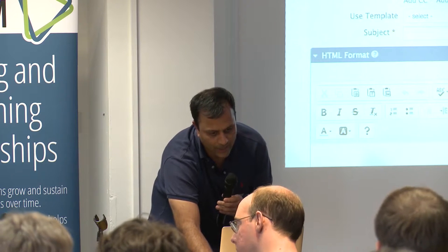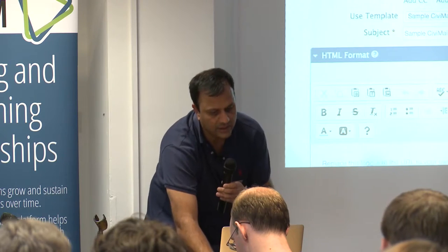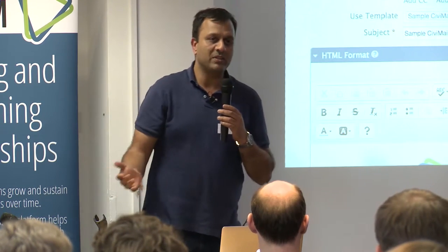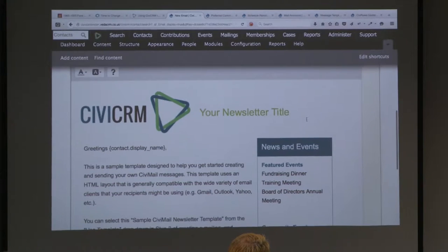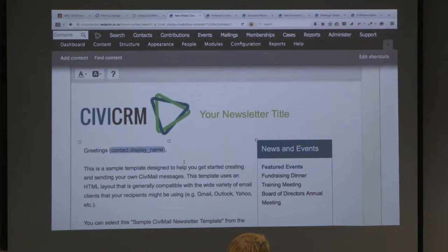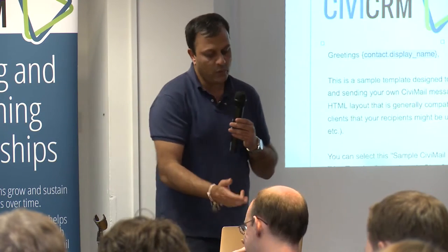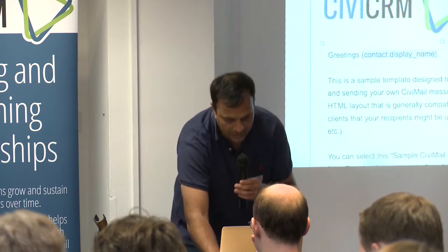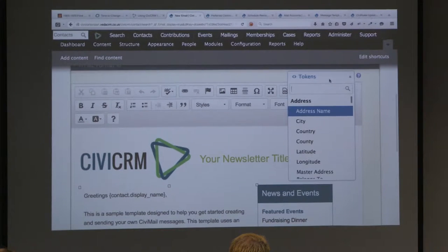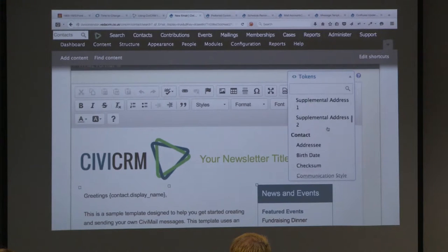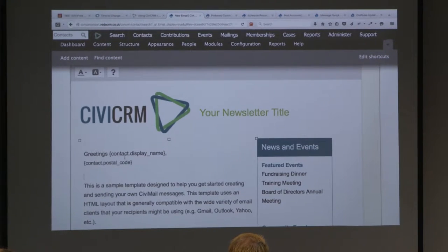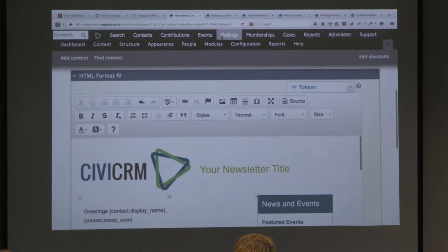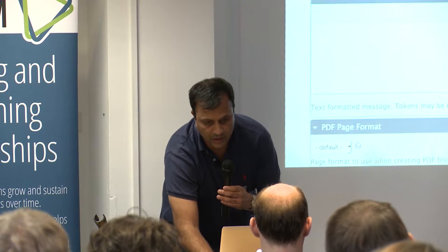Bulk email is a little bit different. With CiviCRM we've got templates - similar to Word templates you'd use for different things. You can keep a template, and here's a sample newsletter template. You'll see tokens - the curly brackets. In this template whoever gets this email is going to get 'Greetings John' or 'Greetings Sarah' - whatever the name is. If I want to add more tokens I can come in here and pick the token I want. For instance, if I wanted to add in a postcode I could do that and then they'd get their postcode in the body of the email.